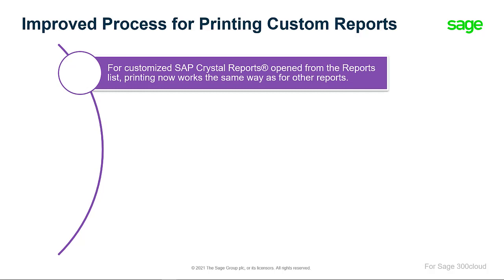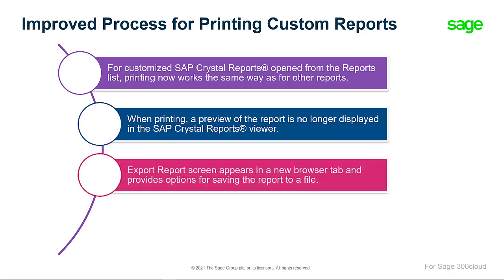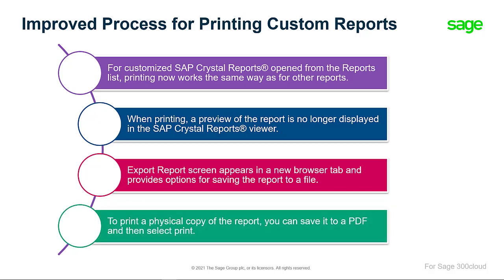The new printing process for web screens that was released with the Sage 300 2021 version is now extended to custom Crystal Reports. You will now have improved overall performance while printing custom reports. When printing a report, a preview of the report will no longer be displayed in the Crystal Reports viewer. Instead, the Export Report screen appears in a new browser tab and provides options for saving the report to a file. To print a physical copy of the report, you can save it to a PDF and then print to your printer from the PDF.